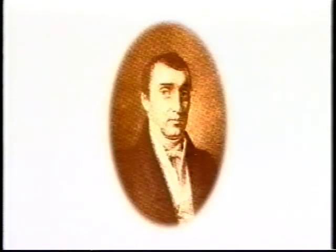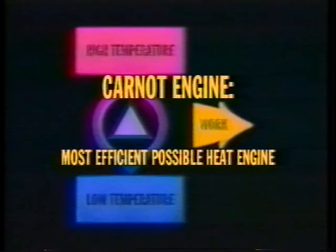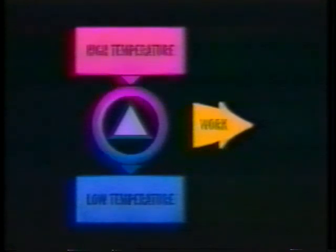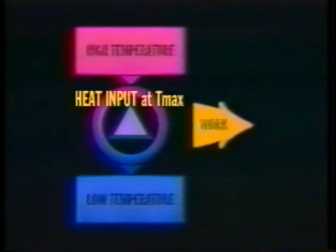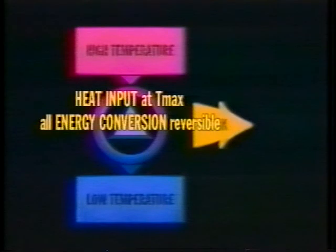"The Motive Power of Heat is independent of the agents employed to realize it. Its quantity is fixed solely by the temperatures of the bodies between which is effected, finally, the transfer of the caloric." By Motive Power of Heat, Carnot was referring to the maximum possible efficiency of a heat engine — that is, the most work that could be derived from a heat source. He hypothesized that the perfect engine would take in all its heat at the maximum reservoir temperature, convert it to work through a series of reversible processes, and reject all heat at the lowest reservoir temperature.